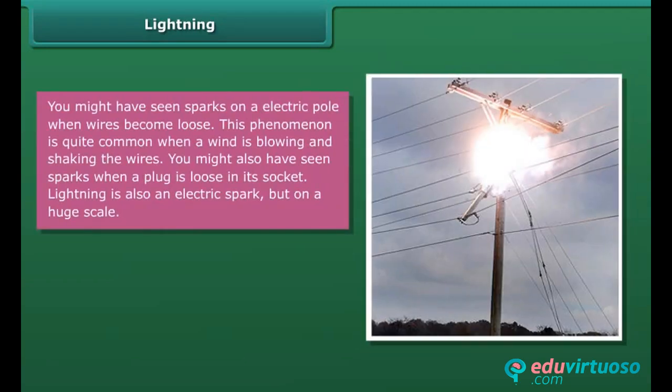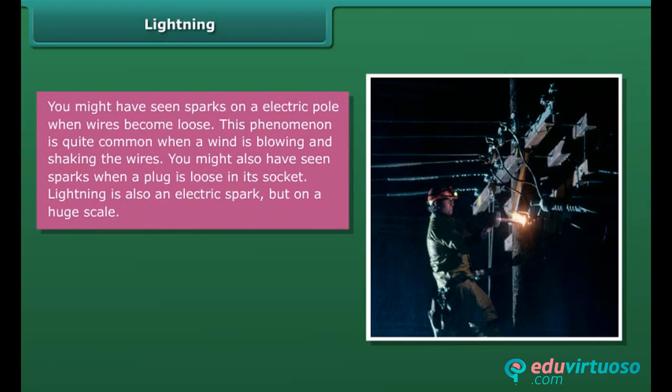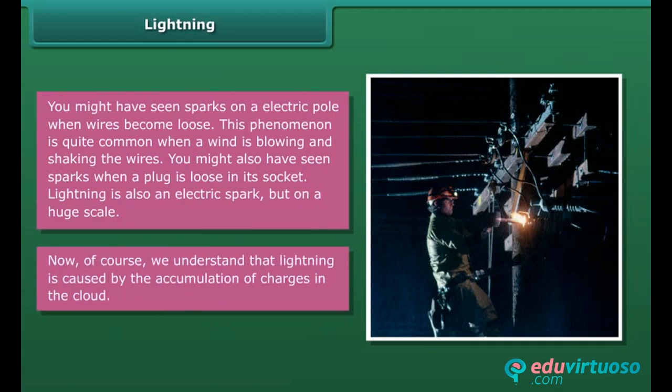You might have seen sparks on an electric pole when wires become loose — this phenomenon is quite common when wind is blowing and shaking the wires. You might also have seen sparks when a plug is loose in its socket. Lightning is also an electric spark, but on a huge scale. We understand that lightning is caused by the accumulation of charges in the clouds.